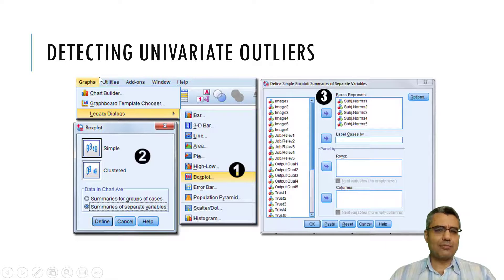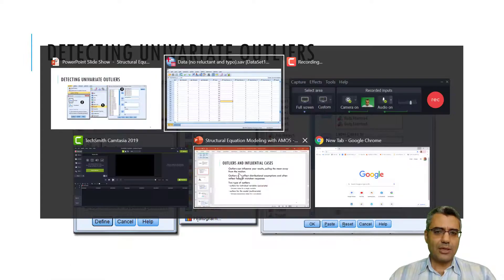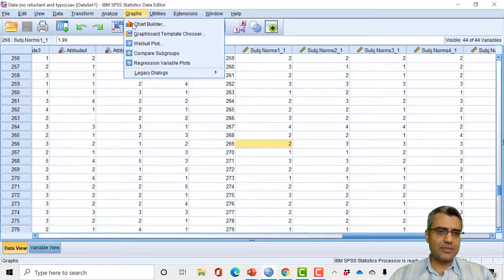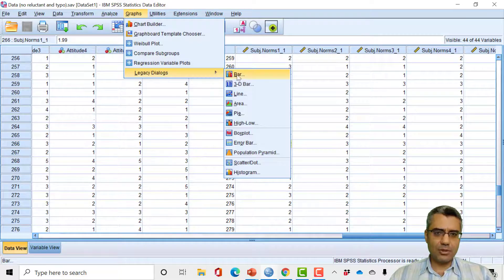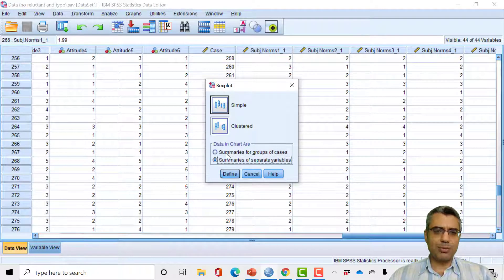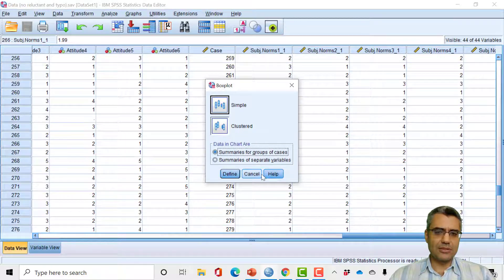For univariate outliers, this is the way you can use SPSS to identify them. Follow the steps here, click here. Then you click on box plot, then you get this window and then you get this and so on. I will show you here. So go to graphs and then legacy dialogues and box plot, and first one, the last one, by default is like this.